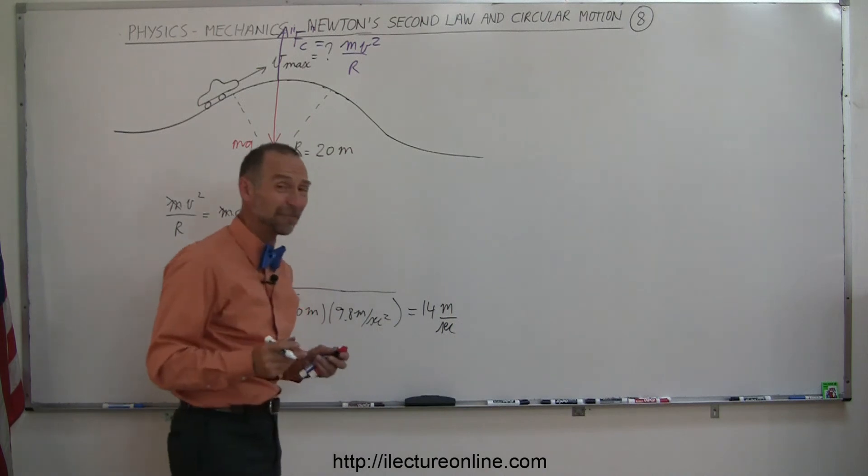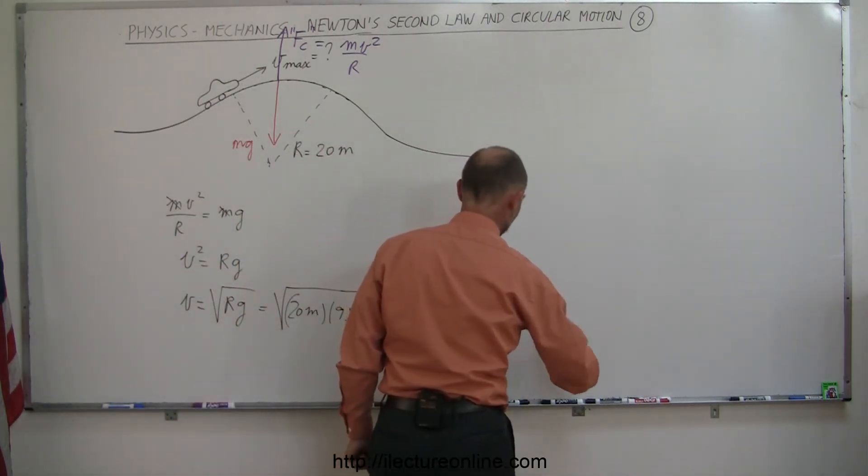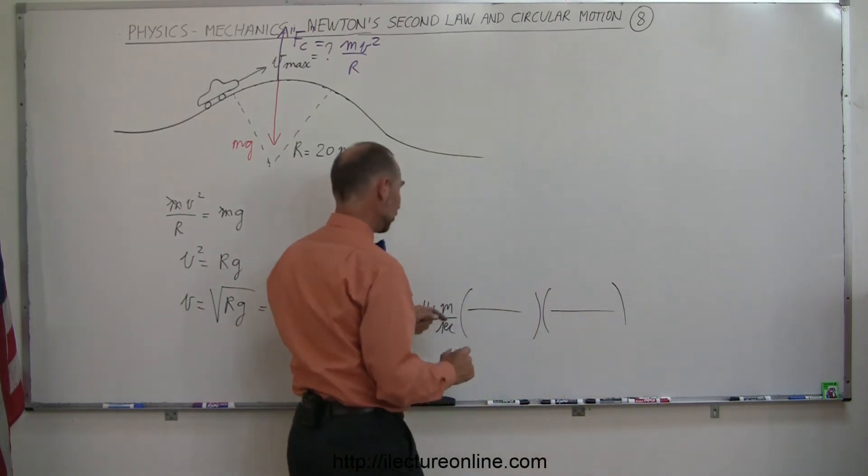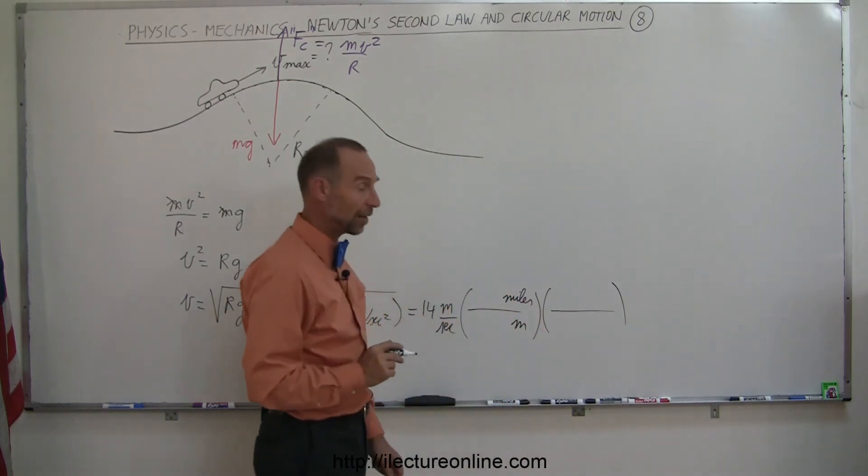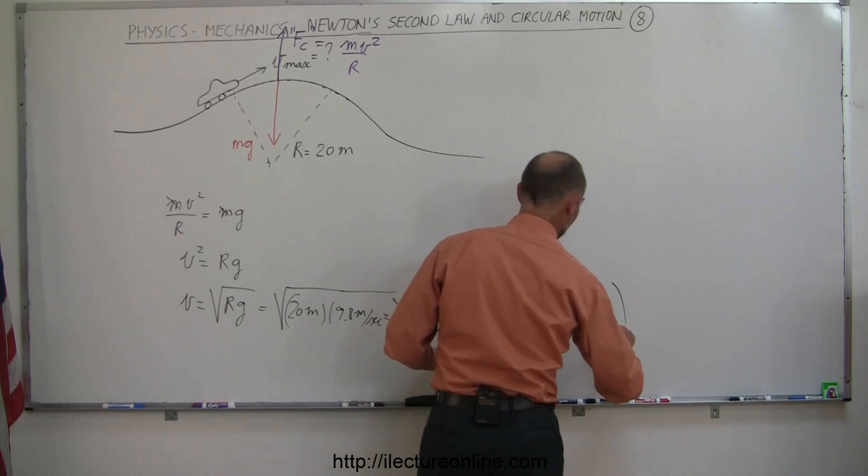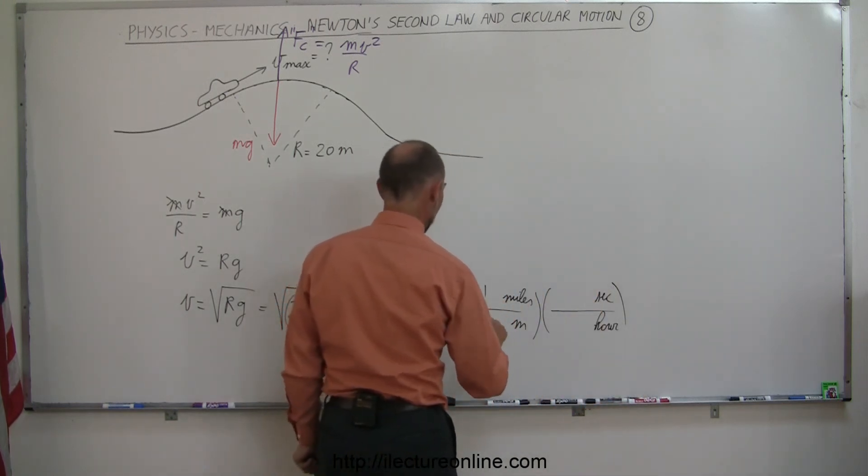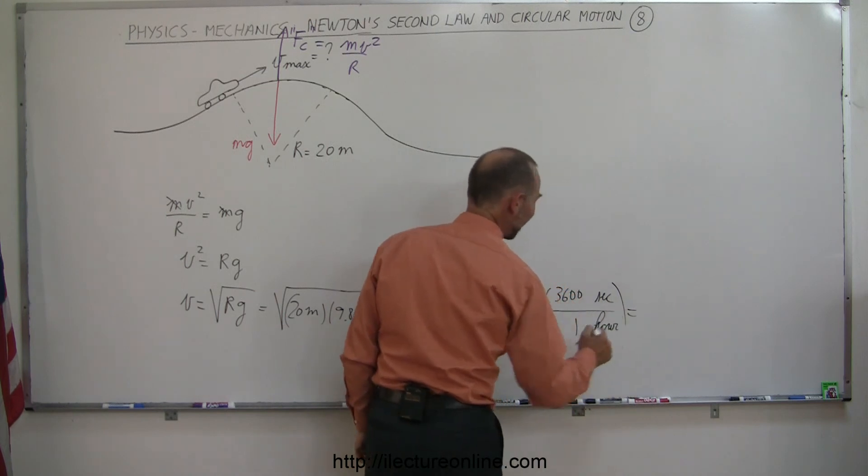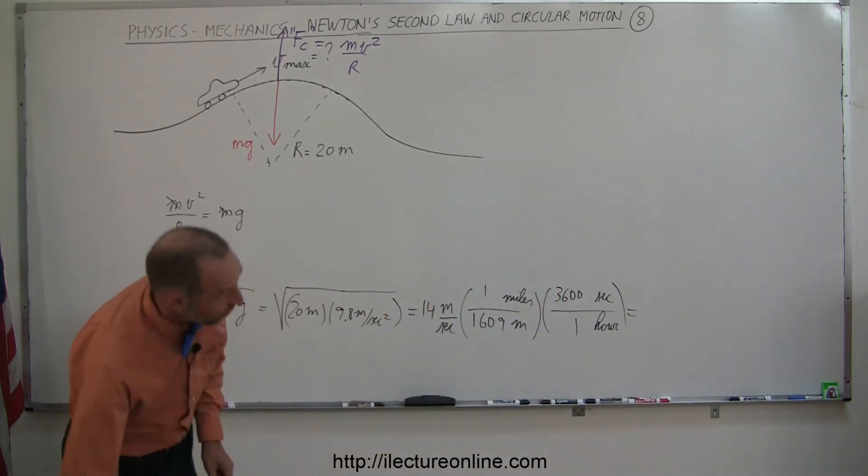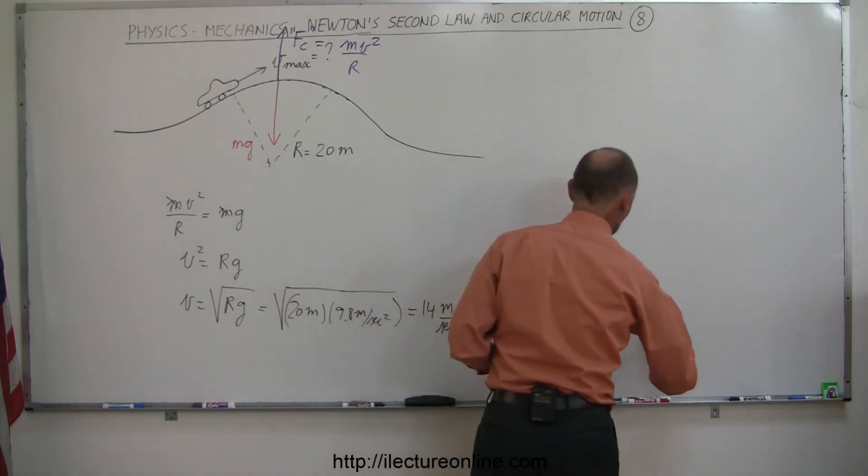Now, for those who are not familiar with how fast that really is, let's convert that to miles per hour. We need to do two conversions. We have meters here, we want that to be miles, and we want meters at the bottom so the meters cancel out. We have seconds at the bottom, we want that to be hours, so we need seconds on the top so they cancel out. One mile is 1,609 meters, and one hour is 3,600 seconds. 14 times 3,600 divided by 1,609 equals 31 miles per hour.